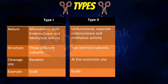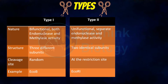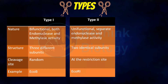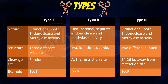In the case of Type II restriction endonucleases, the enzyme is unifunctional and there is a separate enzyme for the methylase activity. Type II restriction endonucleases have two identical subunits. They always cut the DNA at the restriction site only. An example would be EcoRI.